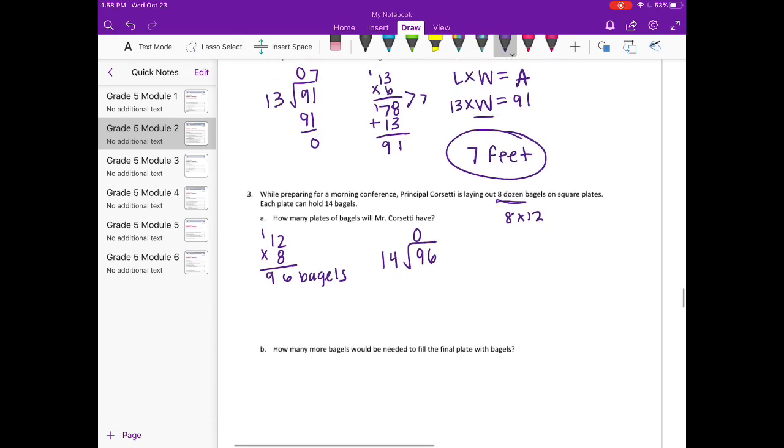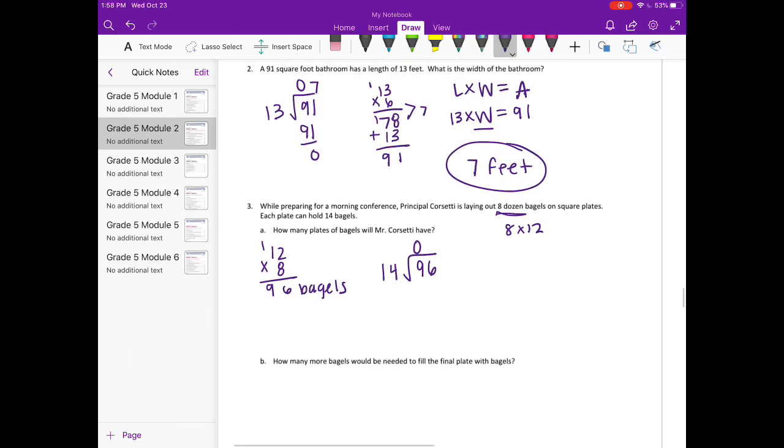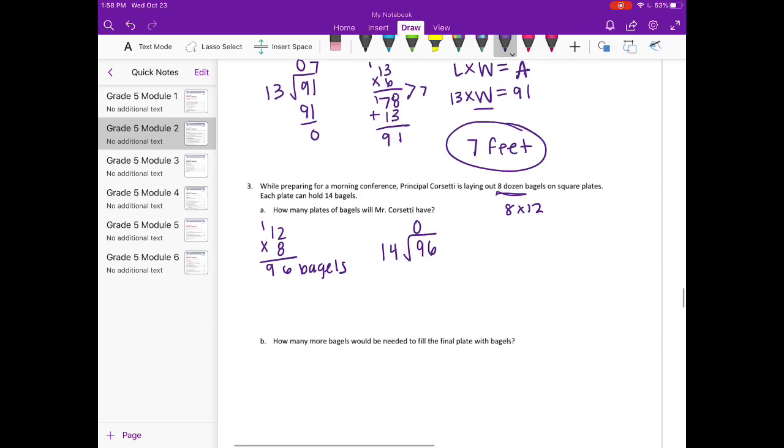Let's see. Like up here, we saw 13 could go into 91 7 times. And this is pretty close. So I'm going to try 14 times 7. That's 98. So that's too many bagels.